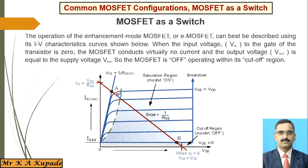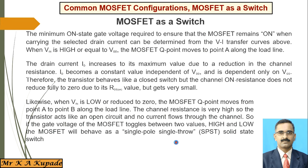So the transistor acts like an open circuit and no current flows through the channel. The gate voltage of the MOSFET toggles between high and low values. In these two situations, the MOSFET behaves like a single-pole single-throw solid-state switch — it acts exactly like that switching operation.